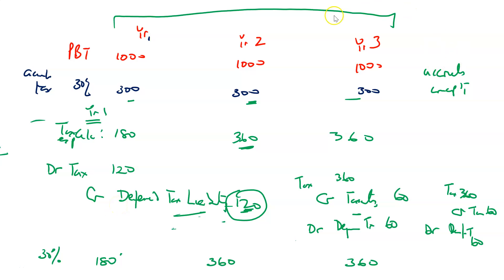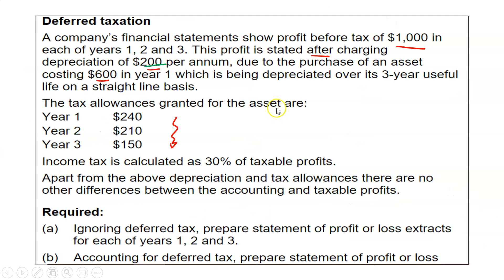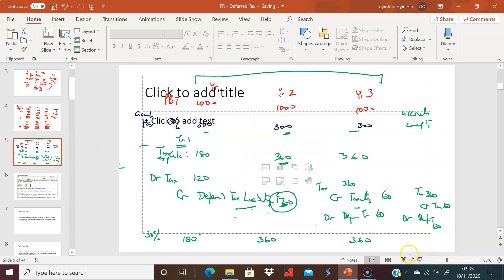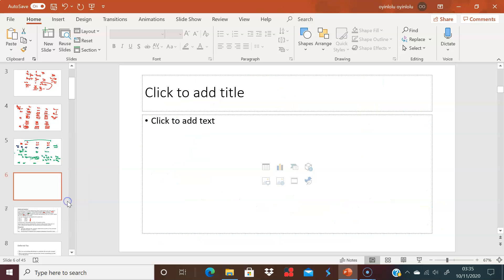What I want to do in this video, which is pretty short, is take you through how we actually deal with this. The principle — the standard requests us — says: if you want to work out what the deferred tax liability is, or how much tax an organization will still pay in the future as a result of this capital allowance issue,